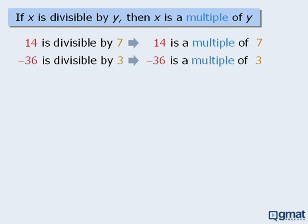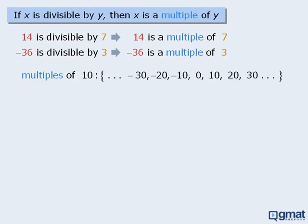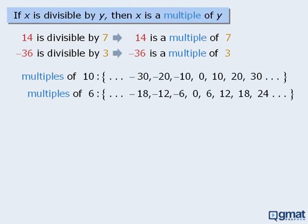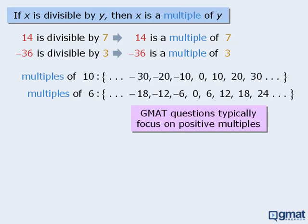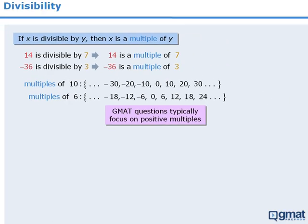To expand on this, these are the multiples of 10, and these are the multiples of 6. Although these multiples include negative values as well as 0, you will find that GMAT questions typically focus on positive multiples.